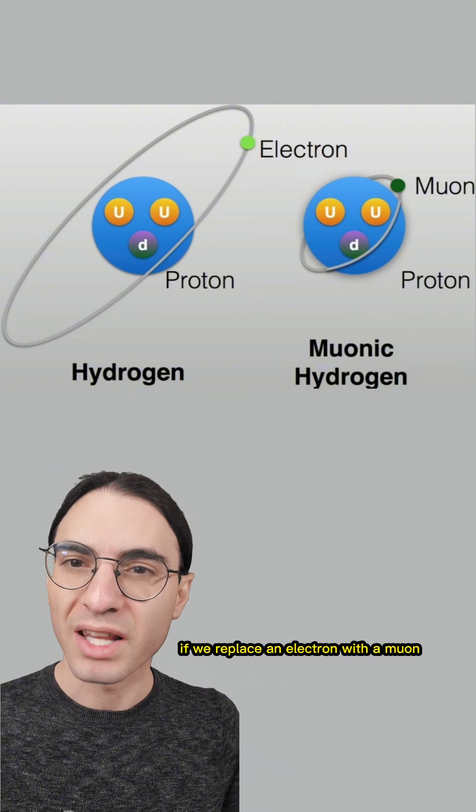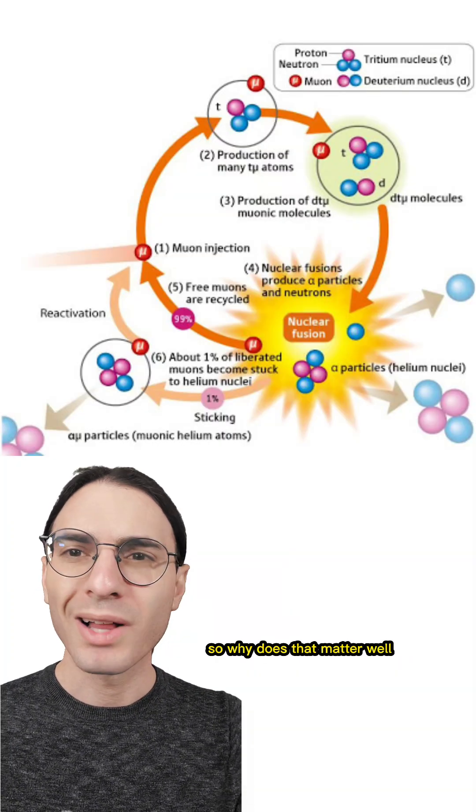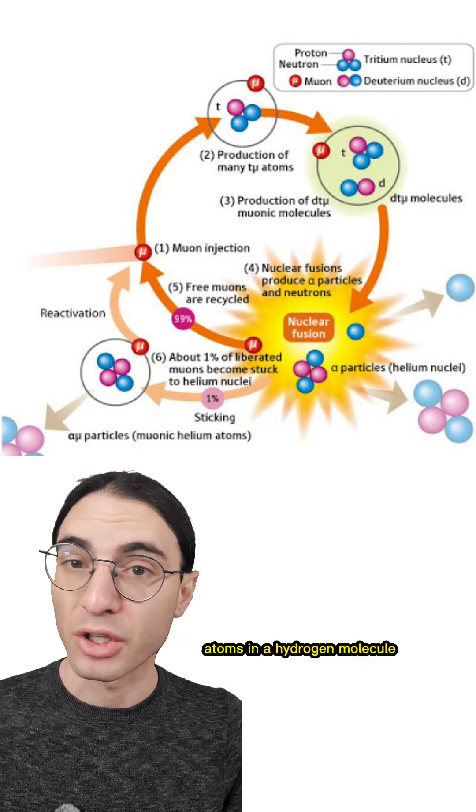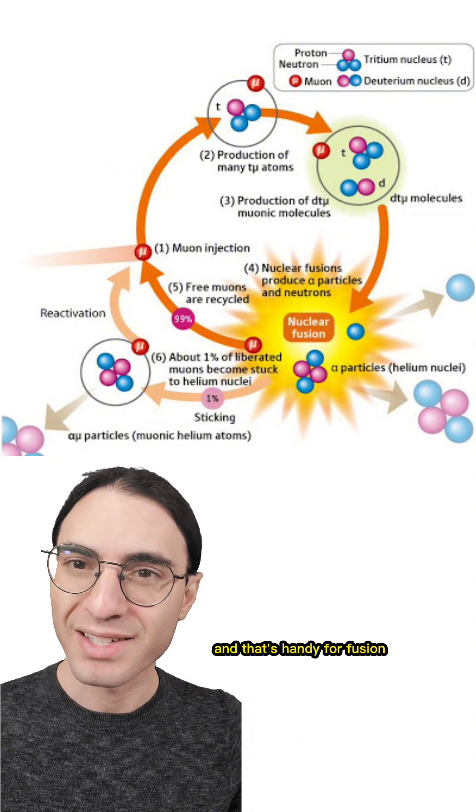And that means that if we replace an electron with a muon, the atom gets 207 times smaller. So why does that matter? Well, if the atoms are 207 times smaller, then the nuclei of, say, two hydrogen atoms in a hydrogen molecule will be much closer together if you replace the electrons with muons. And that's handy for fusion.